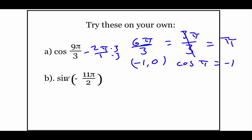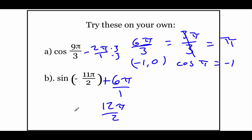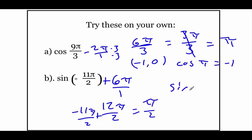For sine of negative 11π over 2, we need to add three rotations, which is 6π or 12π/2. Taking negative 11π/2 plus 12π/2 gives us π/2. The ordered pair at π/2 is (0, 1), and the y value is 1, so sine of π/2 is 1.